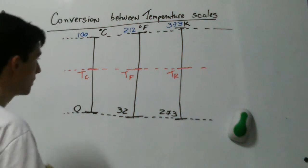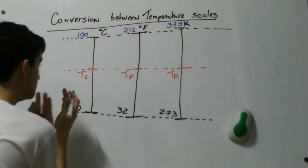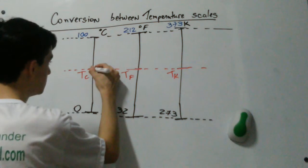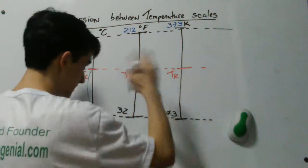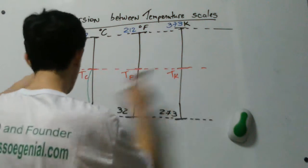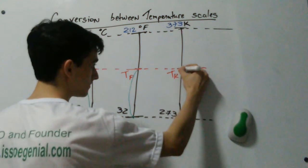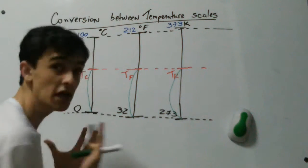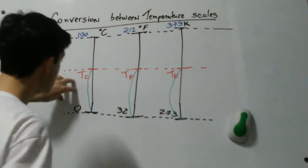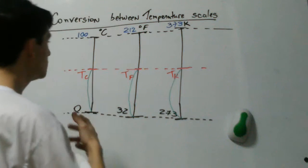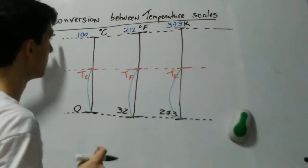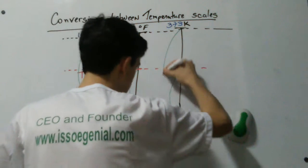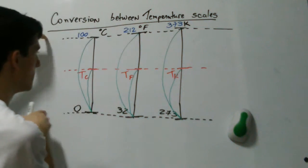We are going to think about the difference — the interval between this arbitrary temperature and the ice point. This difference is the same no matter which scale you are using, because the temperatures are the same and what changes is only the number we are using. We're also going to think about a second interval: from the steam point to the ice point. This interval is also the same no matter which scale you are using.